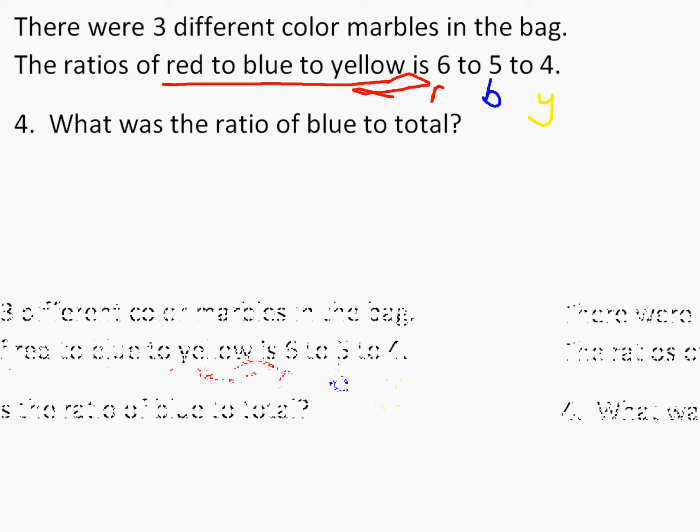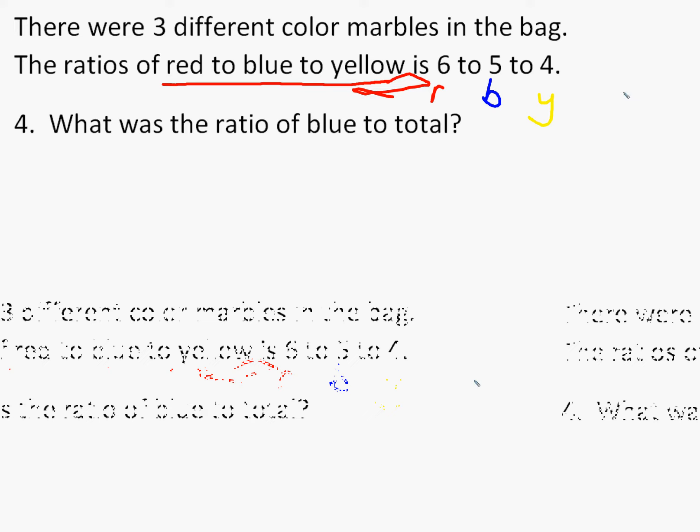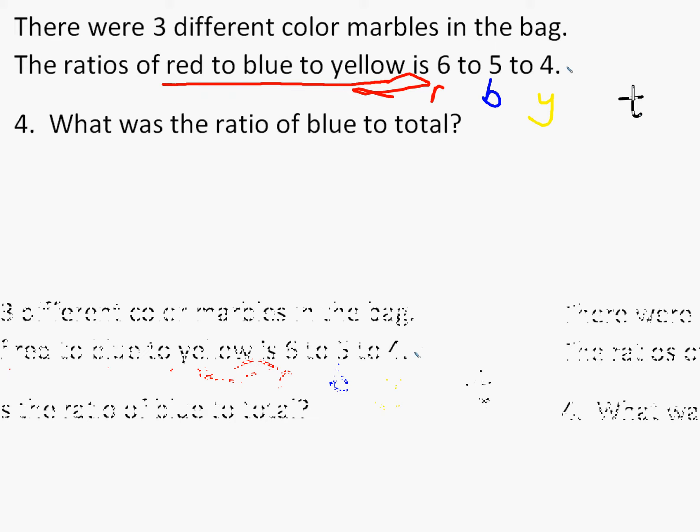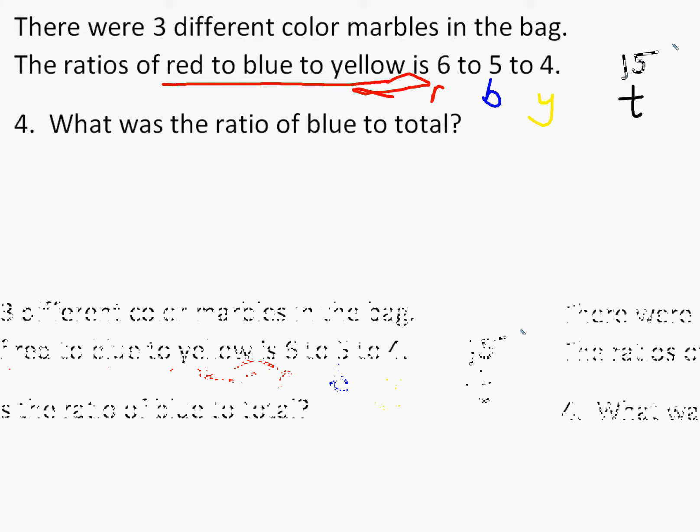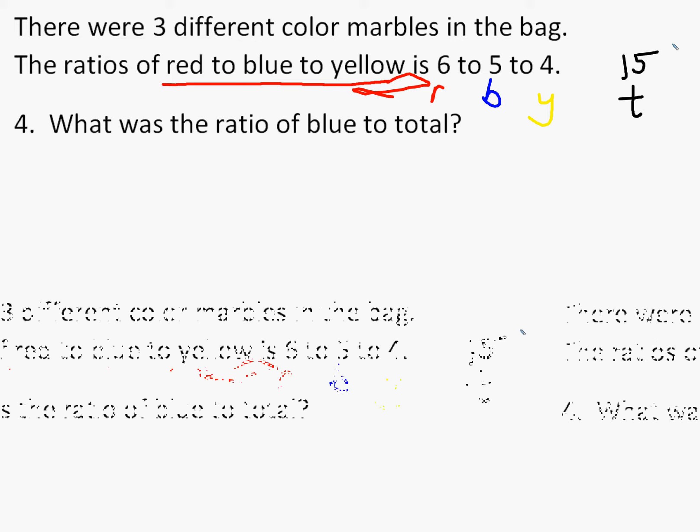And so we can work with this. It's 6 to 5 to 4. What's the ratio of blue to total? Well, we don't have a total written here, but since there's three different colors, here we have 6 red, 5 blue, and 4. So we can add those up. 6 plus 5 plus 4 is 15. And so we recognize we have a total. And this is only for our ratios. There's not a total of 15, but compared to the other ones, it would be 15.